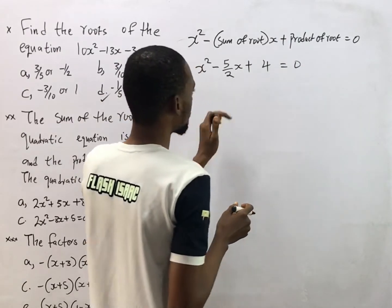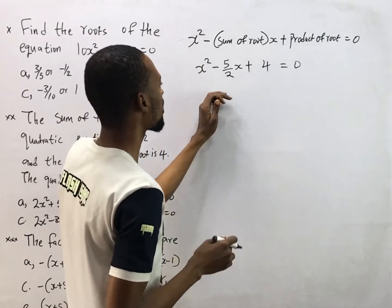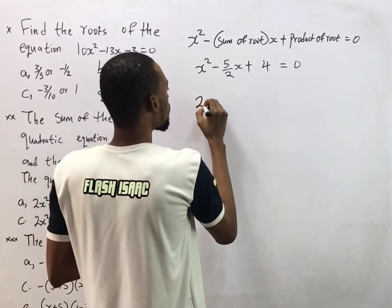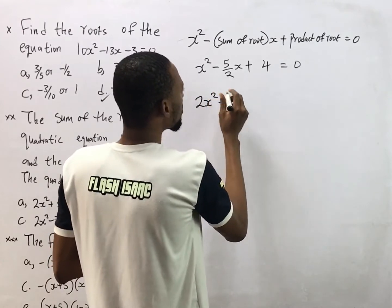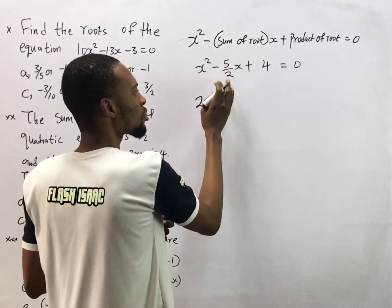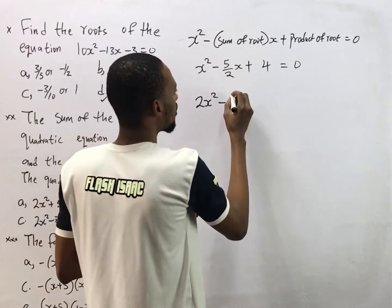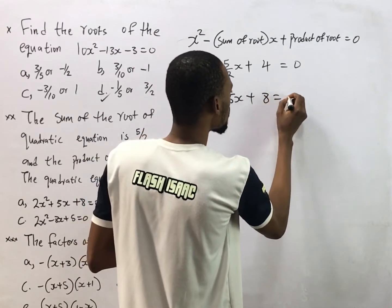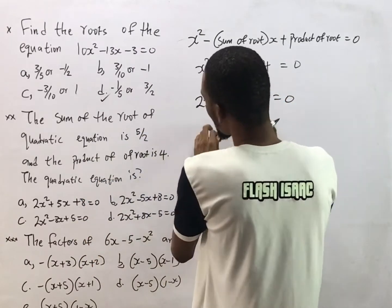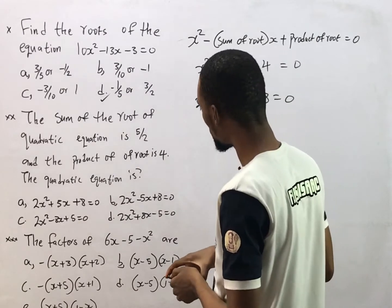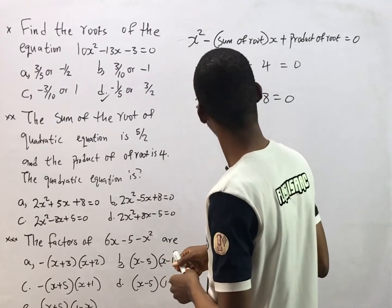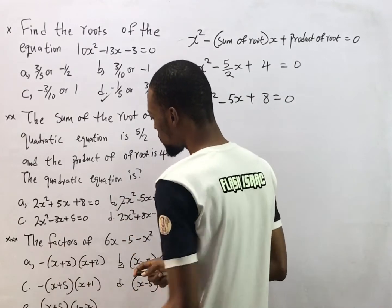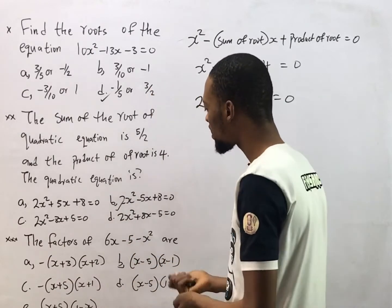We can simplify this by multiplying throughout by 2. Two times s squared is 2s squared; 2 times 5 over 2 equals 5, so we get minus 5s; and 2 times 4 is 8. So the quadratic equation is 2s squared minus 5s plus 8 equals zero. Looking at the options, that corresponds to option B.